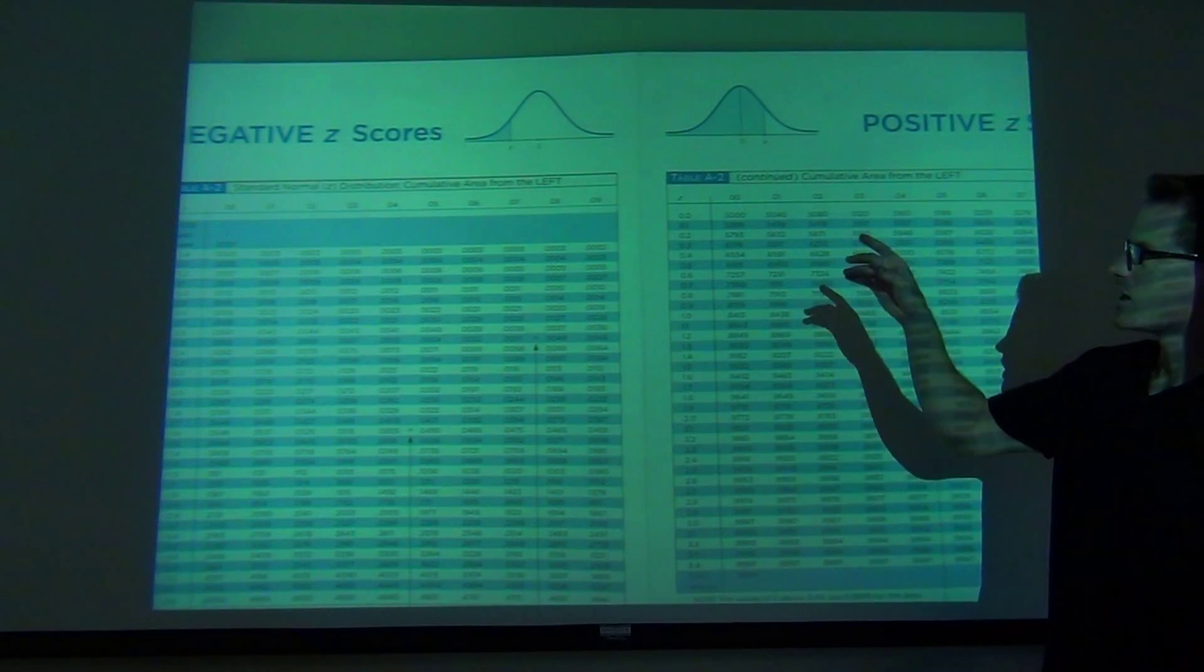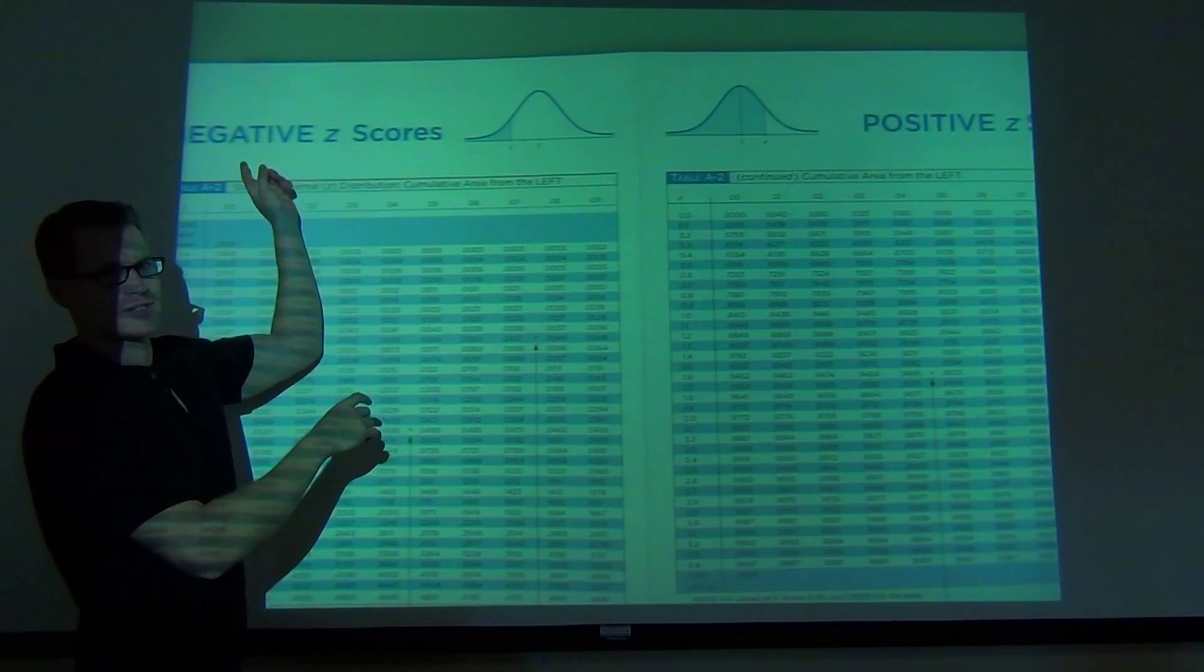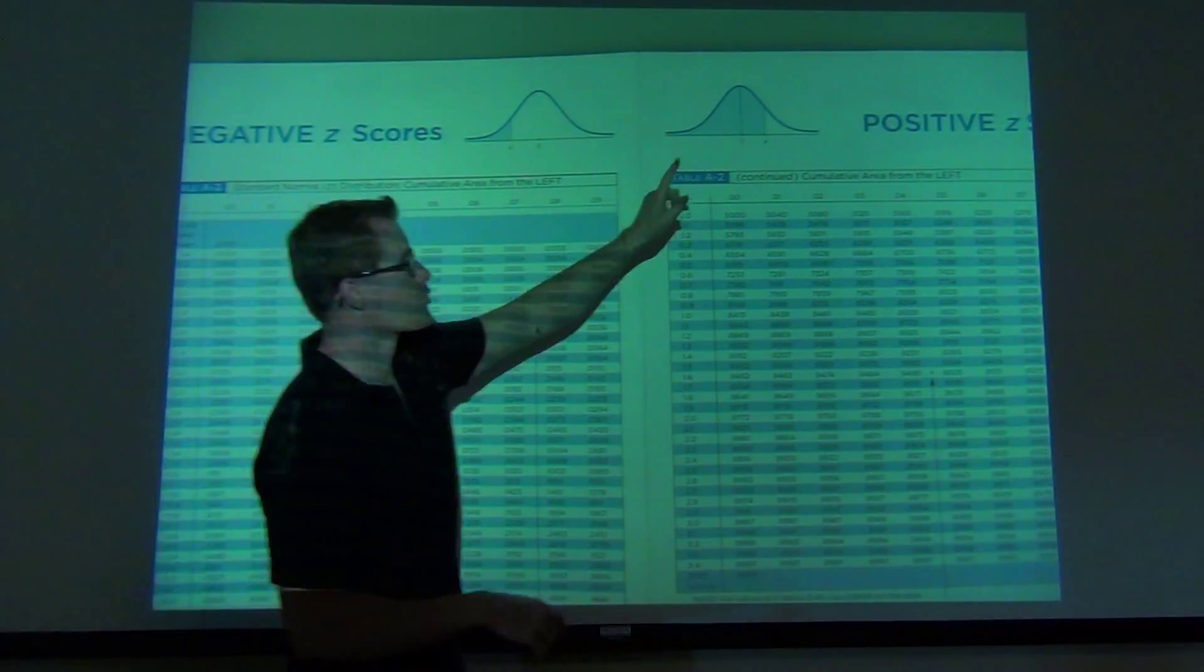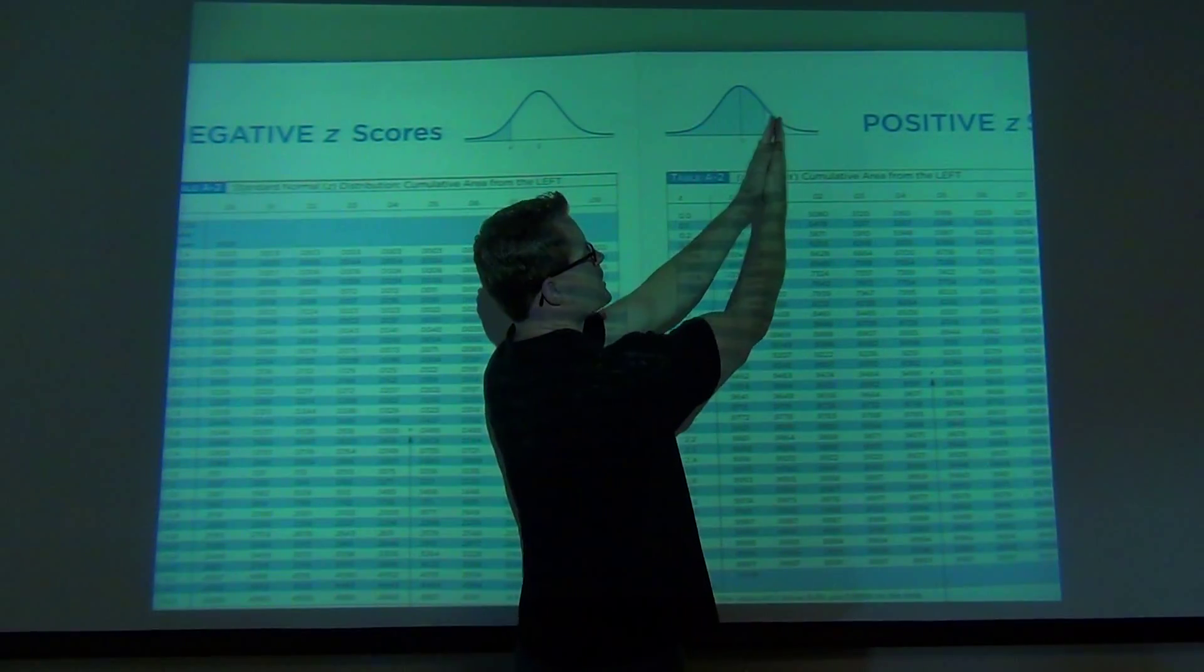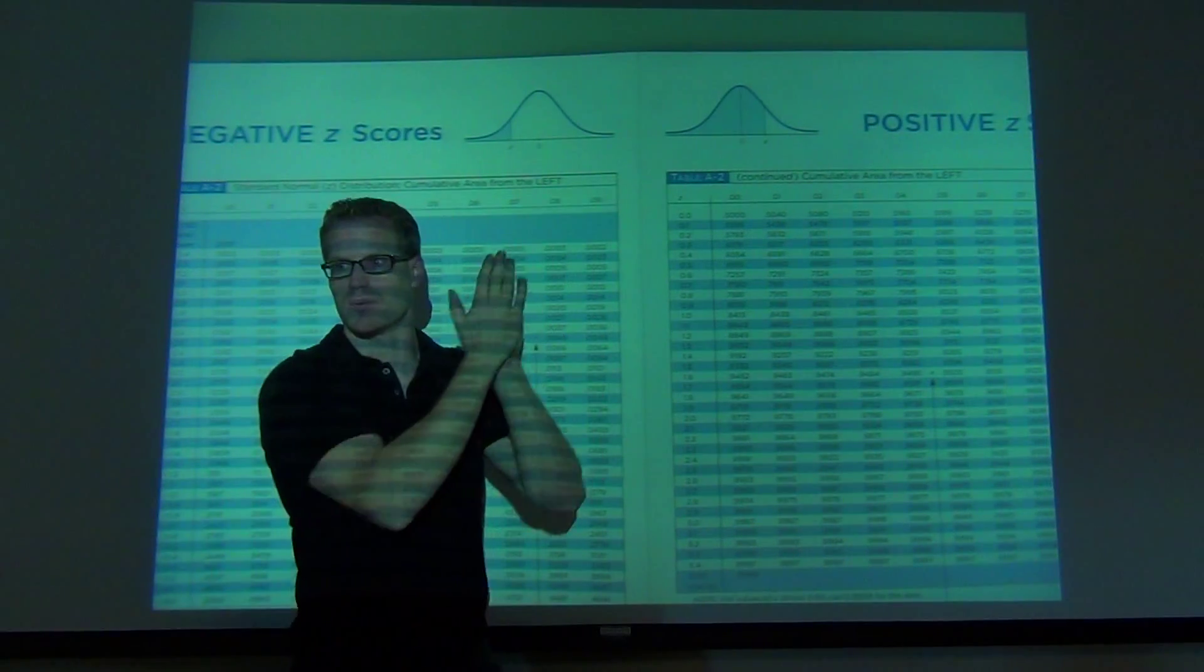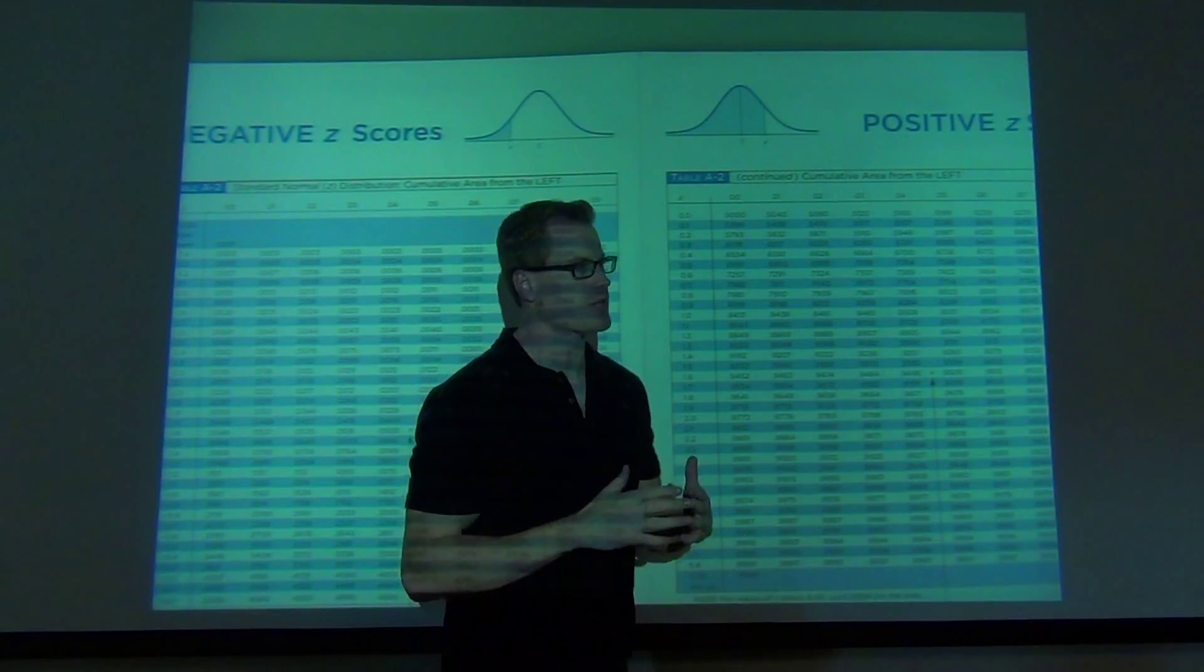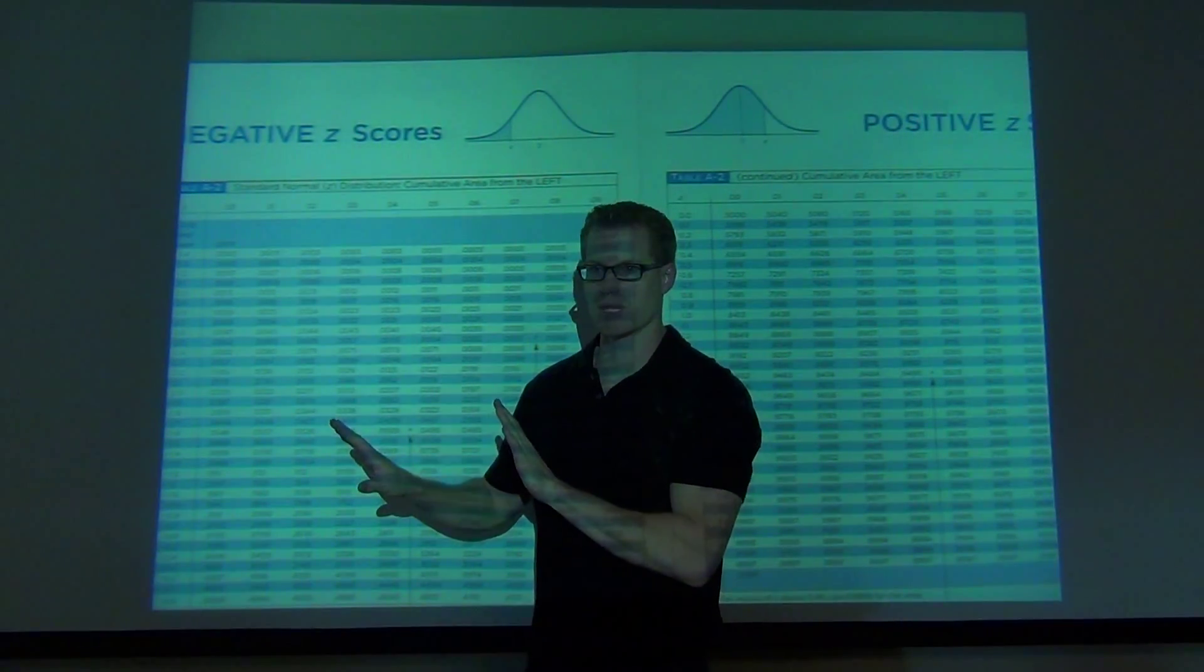If you look at the top, we've got two different situations here. We have something that says negative or positive Z scores. But you're going to notice that every situation, it's shaded to the left. You see what I'm talking about? So that shading says that whatever value you look up, it's just going to give you the area to the left of whatever you're telling it.